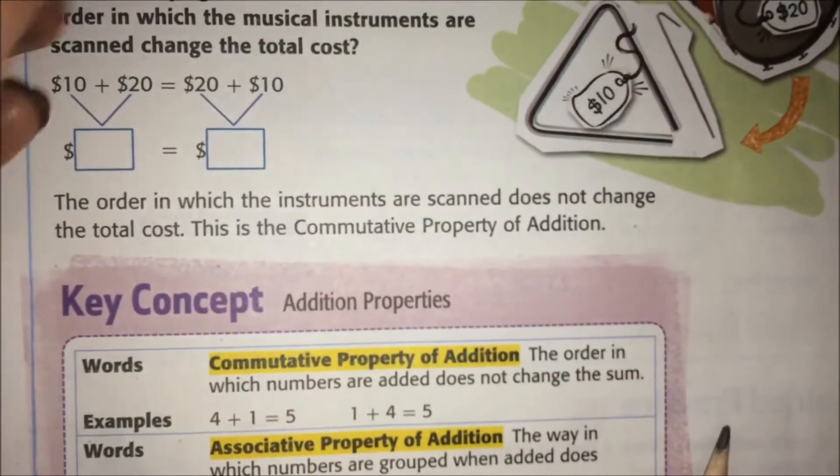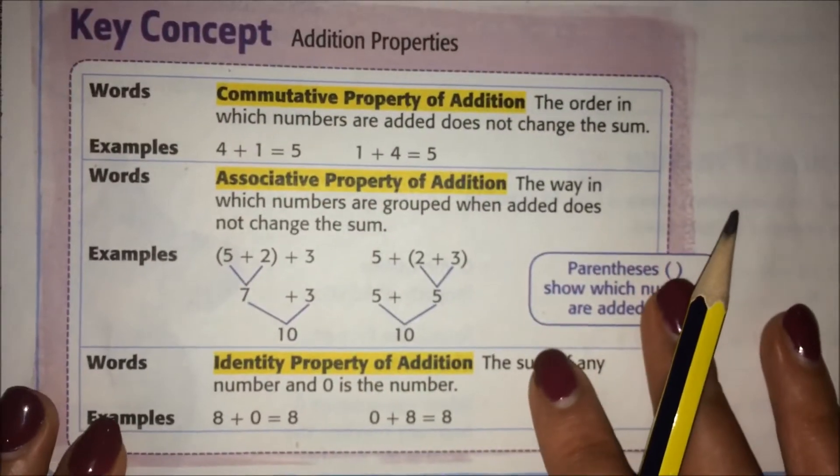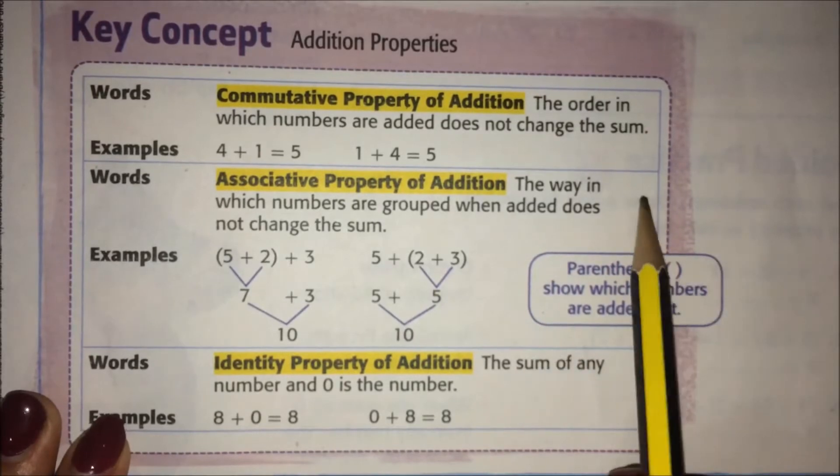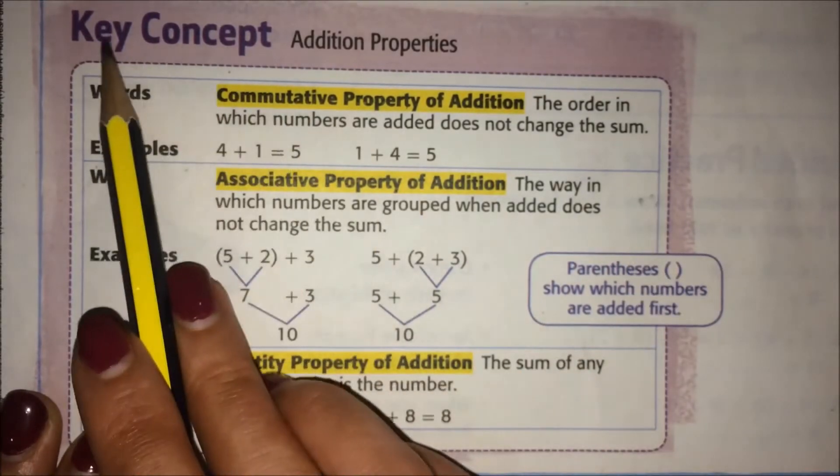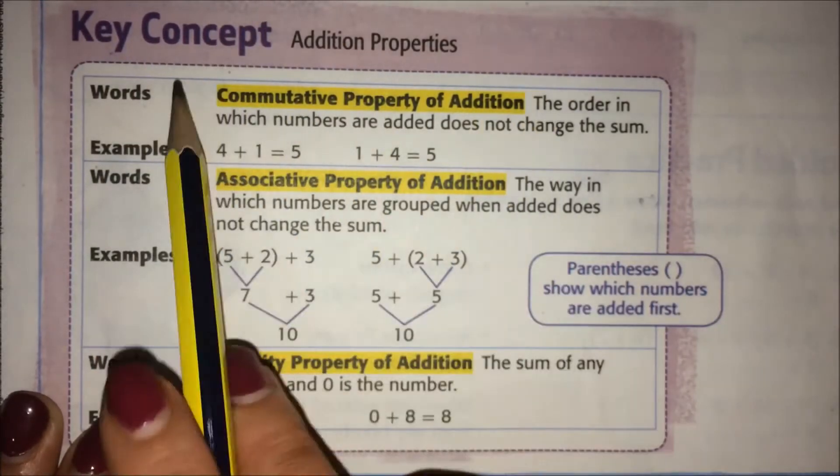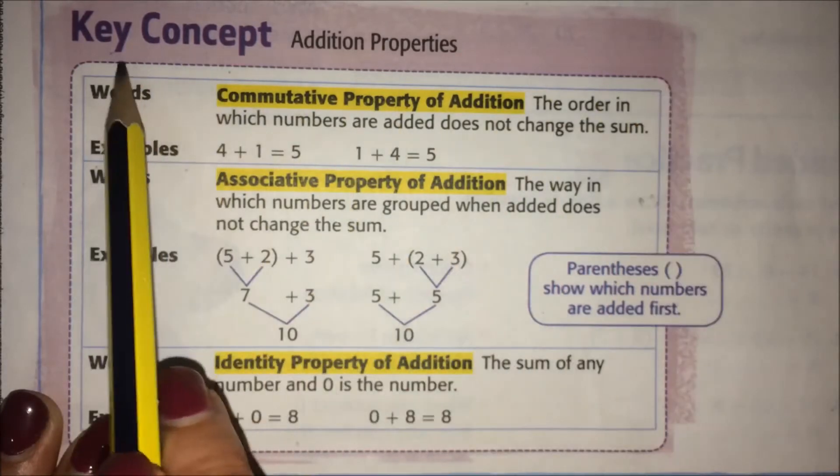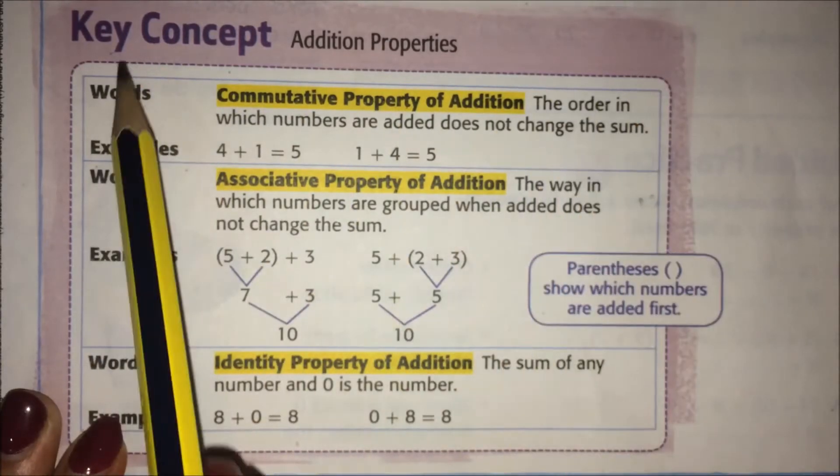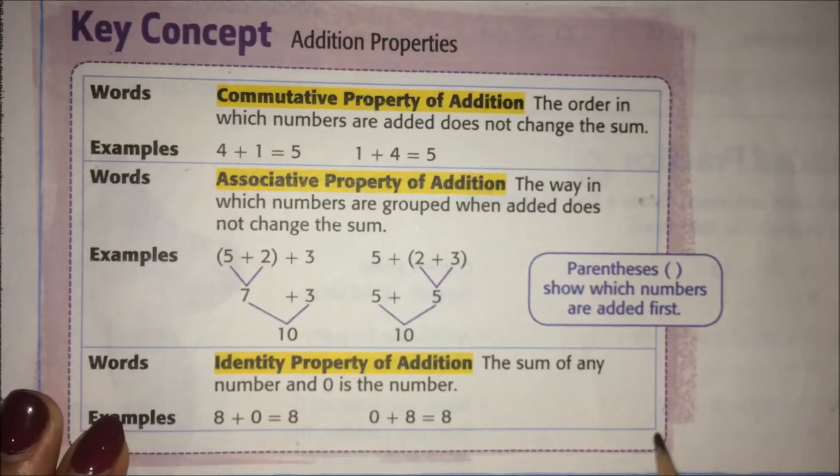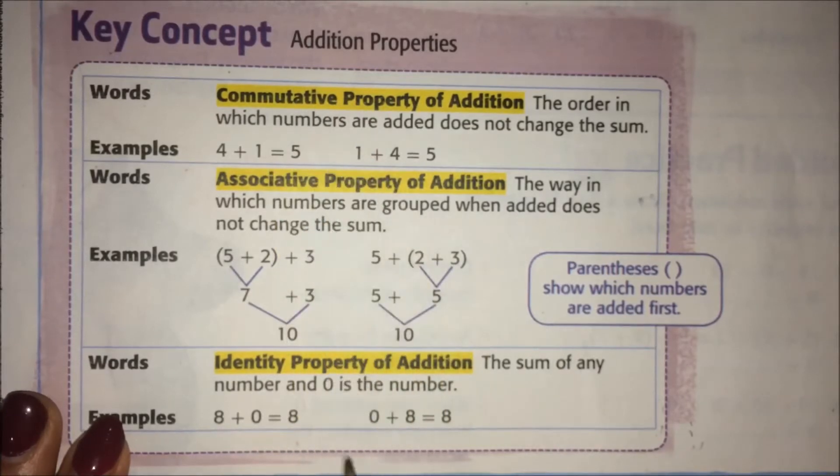We're going to use this purple box in the math book. Any time you see a purple box, it's called the key concept box, and it gives you really important information. These purple boxes might be needed later on in the chapter, so you might have to flip back to this purple box any time you get confused.